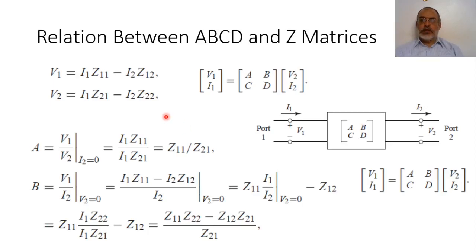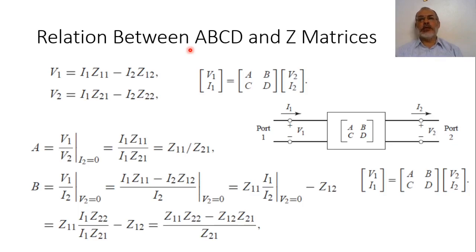In the previous video, we introduced the ABCD transmission matrix, and we saw that the main advantage is that for cascaded networks, the total ABCD matrix is the multiplication of the ABCD matrices of the cascaded networks. The question now is: what is the relation between the ABCD matrix and the other types of network matrices? Once we get a relation between one type of matrix and another, we can convert between types.